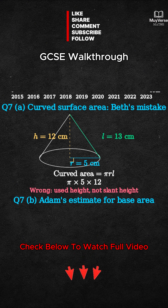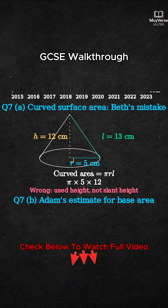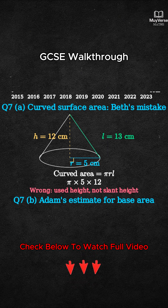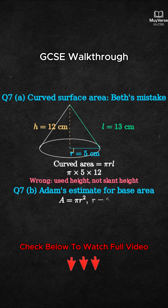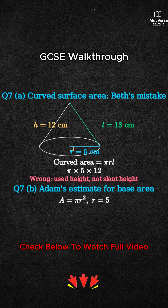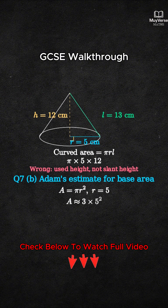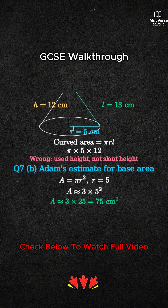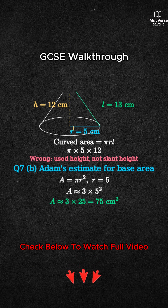Question 7 Part B: Adam estimates the area of the base using pi approximately 3. The base is a circle, so area equals pi times R squared. Substitute R equals 5 and replace pi with 3. Compute 3 times 25 equals 75 square centimeters.